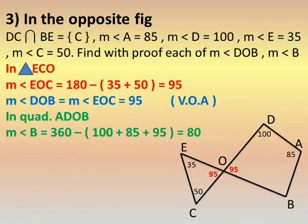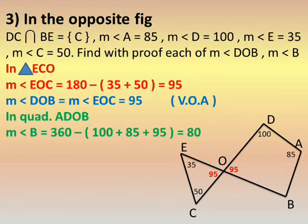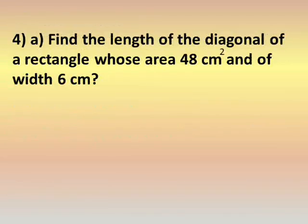Now in the quadrilateral we have three known angles and need the last one — angle B. So: in quadrilateral ADOB, measure of angle B equals 360 minus (100 plus 85 plus 95).